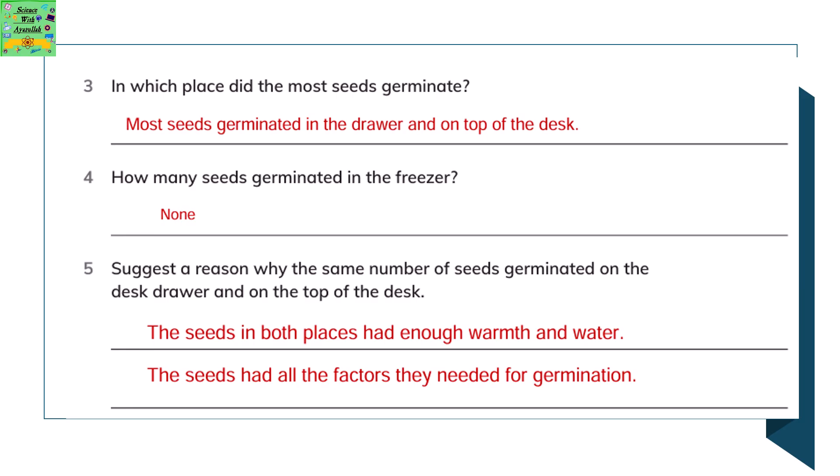According to the bar chart, in which place did the most seeds germinate? The most seeds germinated in the drawer and on top of the desk. How many seeds germinated in the freezer? None — that is zero.